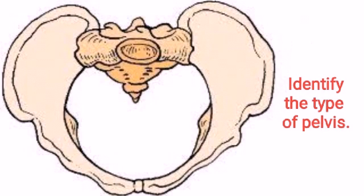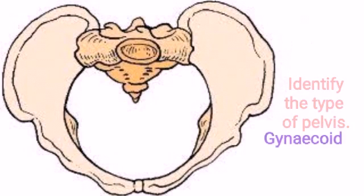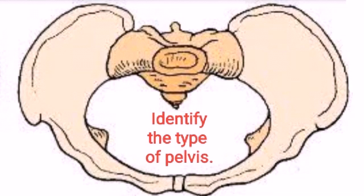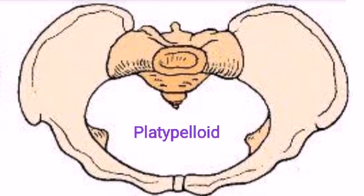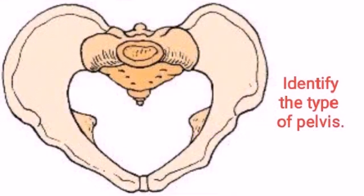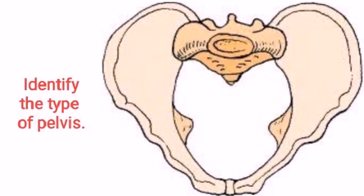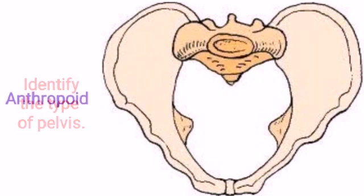Identify the type of pelvis: Gynecoid. Identify the type of pelvis: Platypelloid. Identify the type of pelvis: Android. Identify the type of pelvis: Anthropoid.